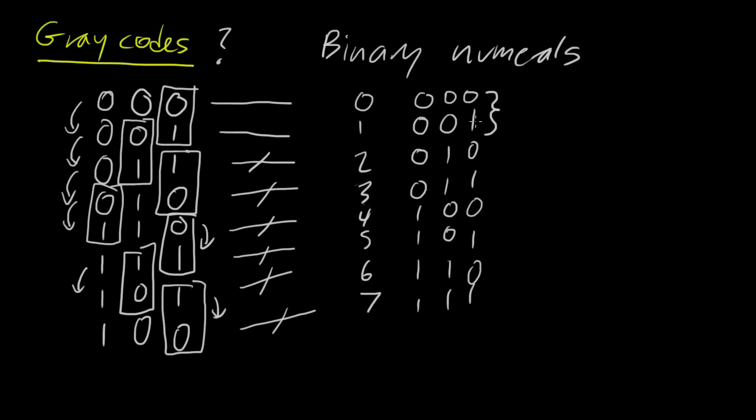Whereas, as you notice in binary numerals, between any two possible numbers, there can be quite a few bits that are changing. Between here and there, that's just one bit's changing. But between this and that, this bit's changing, as is this bit. And likewise over here, every single bit here is changing.